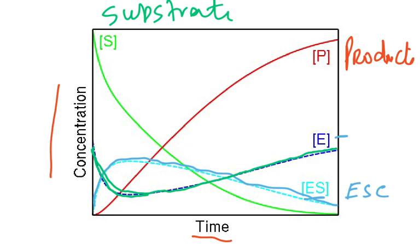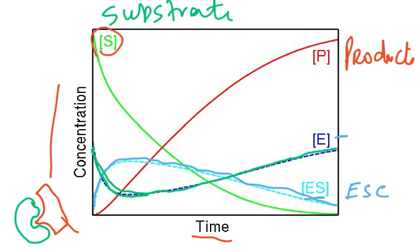Initially the empty active sites decrease as substrate molecules bind to them. Then, as substrate is used up — say from 1000 molecules down to zero — the empty active sites increase back to their original number. Imagine the reaction: substrate fits into the enzyme, the reaction proceeds, and when all substrate is finished all active sites are empty again. This is a very challenging question.